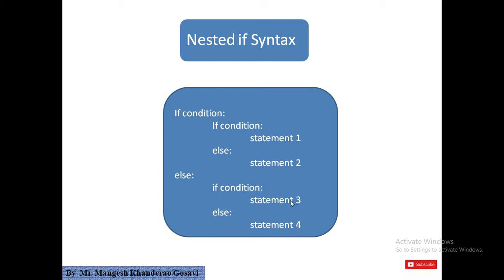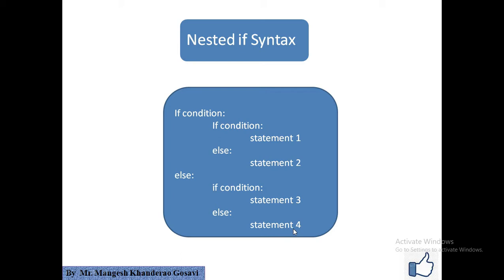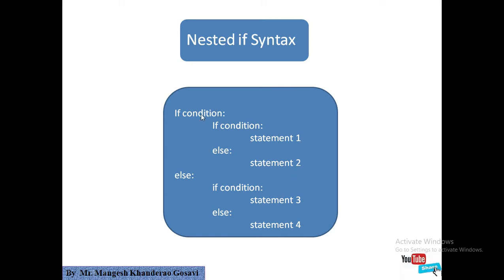Statement three is in an if that is inside the outer else. When the outer condition is false, control comes to the outer else, and if the inner condition is true, statement three is executed. Statement four is executed when both outer and inner conditions are false. So: statement one — both conditions true; statement two — outer true, inner false; statement three — outer false, inner true; statement four — both false.